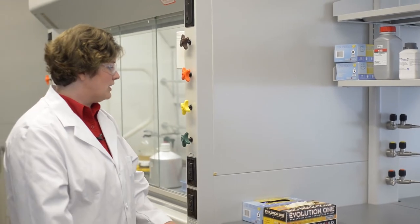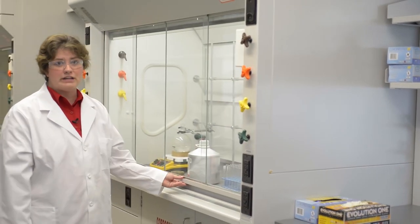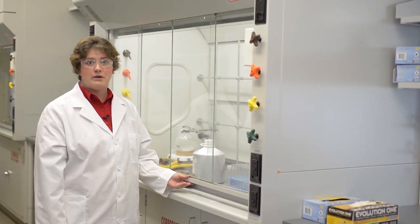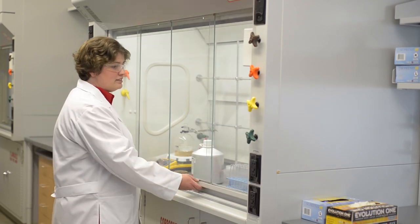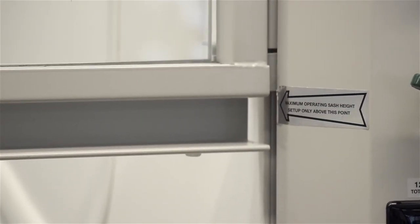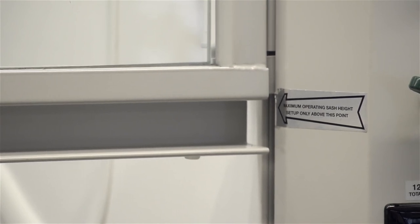When you work with volatile substances or hazardous chemicals, you'll want to be sure and work in a chemical fume hood, so it's important you know how to use one. You want to raise the sash only up to the maximum operating height, which is either 14 or 18 inches.